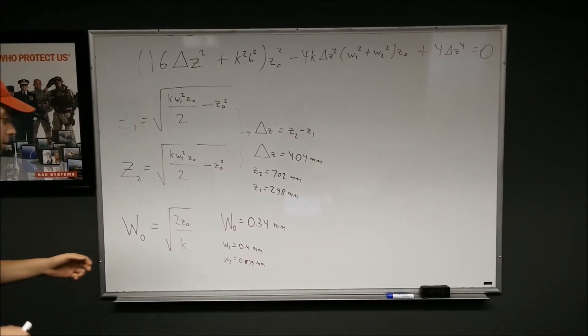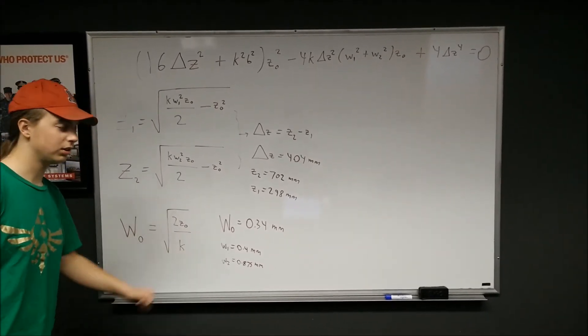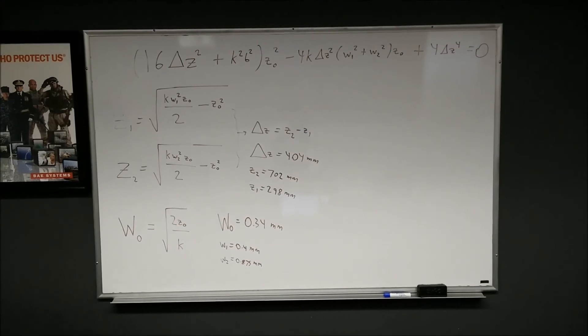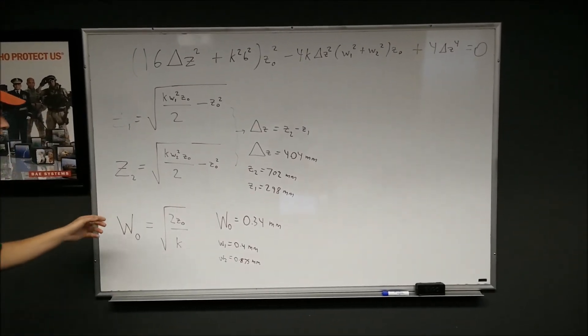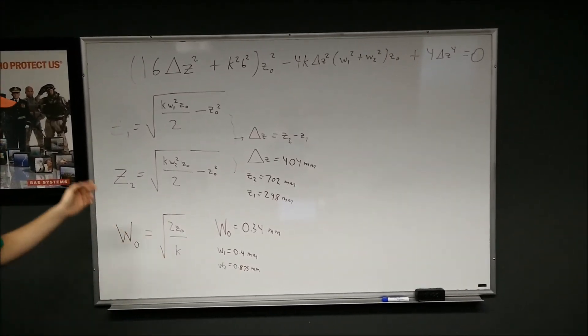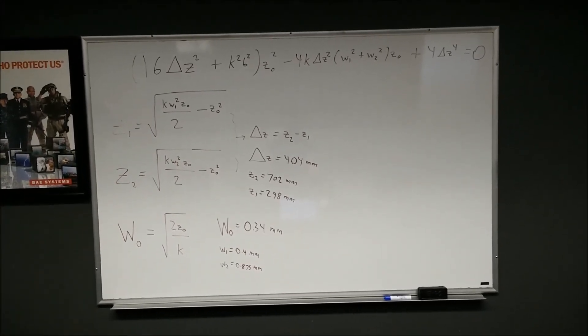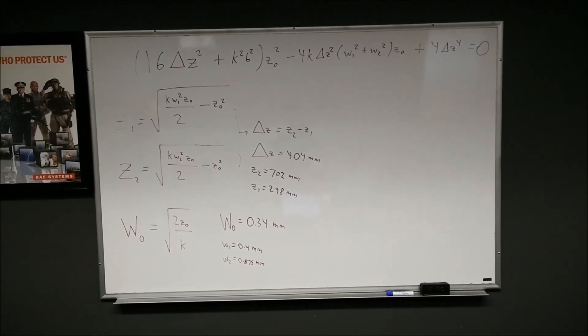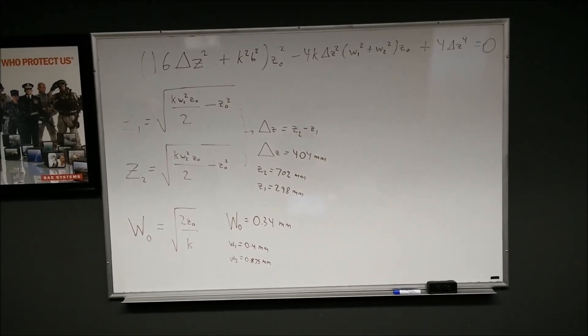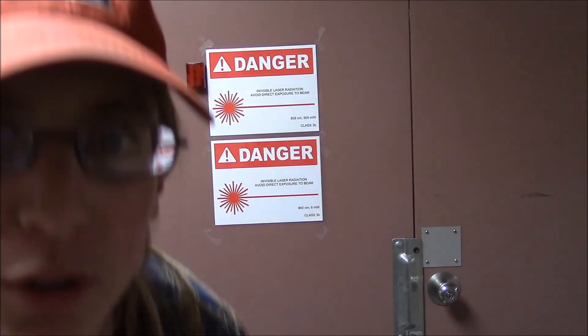For the Gaussian beam profile without the lens, we obtained the values for W1 and W2 from the graph. And we plugged into these equations to get W naught, the beam waist, as well as delta Z, the change in Z position, measured from the same side when you were measuring the Gaussian beam profile. Hope you enjoyed lab two.